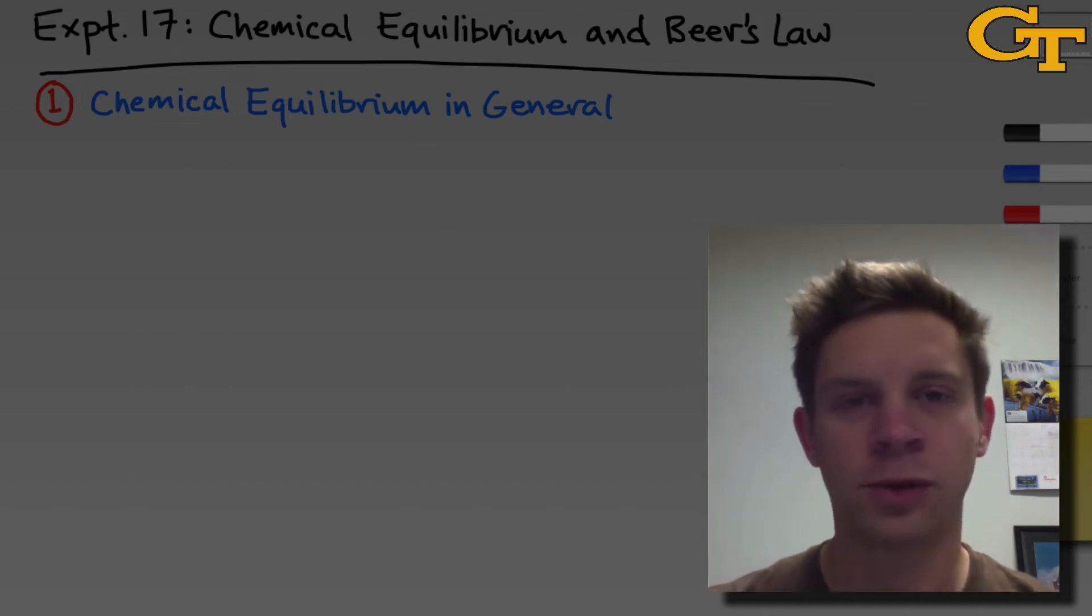Experiment 17 in Chem 1212 is titled Chemical Equilibrium and Beer's Law. The principles and concepts of chemical equilibrium are going to be really important throughout your study of chemistry. If your future career involves chemistry in any way, shape, or form, you will use chemical equilibrium. I guarantee it. So this experiment is really important.